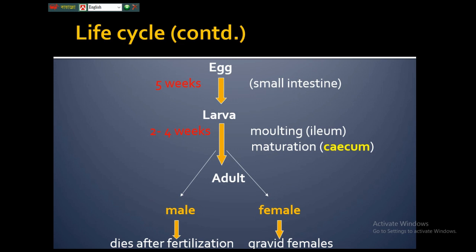In the detailed life cycle: eggs are ingested (sometimes inhaled) and reach the small intestine, where the larva hatches. The larva undergoes molting and maturation in the cecum, developing into male and female adults. The time from egg to larva is about five weeks, and from larva to adult about two to four weeks. After fertilization, the male dies — there is no purpose for the male to survive beyond fertilization.